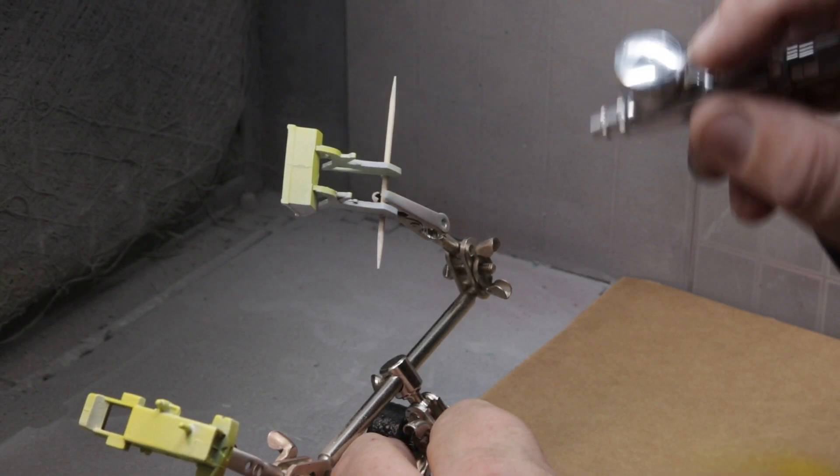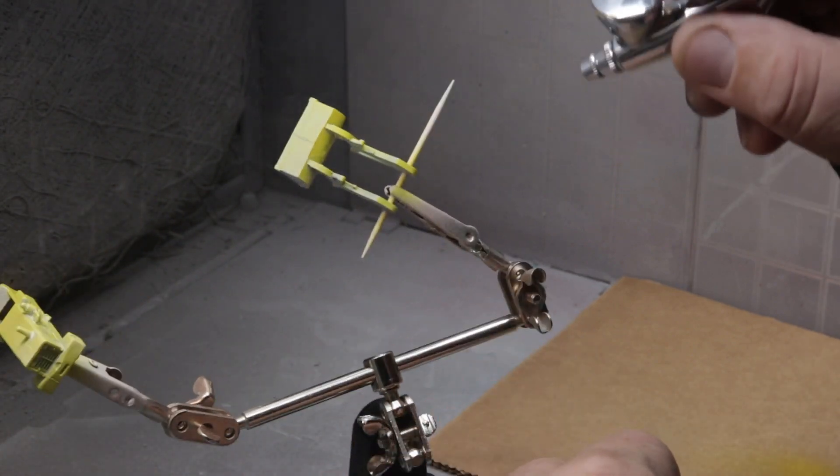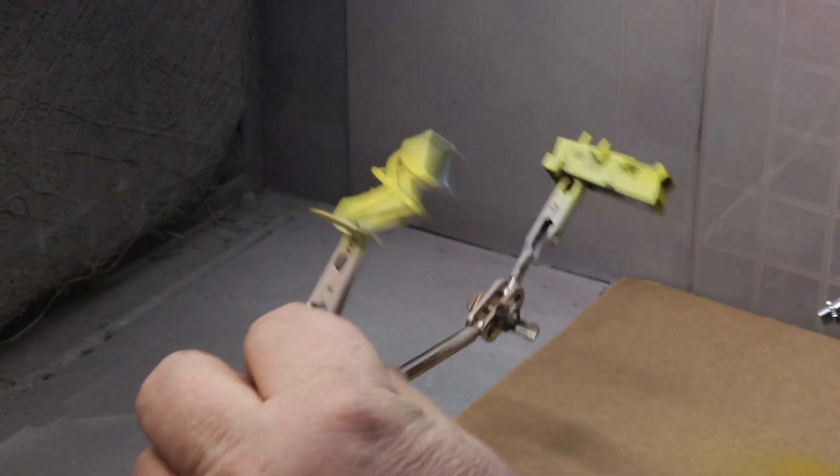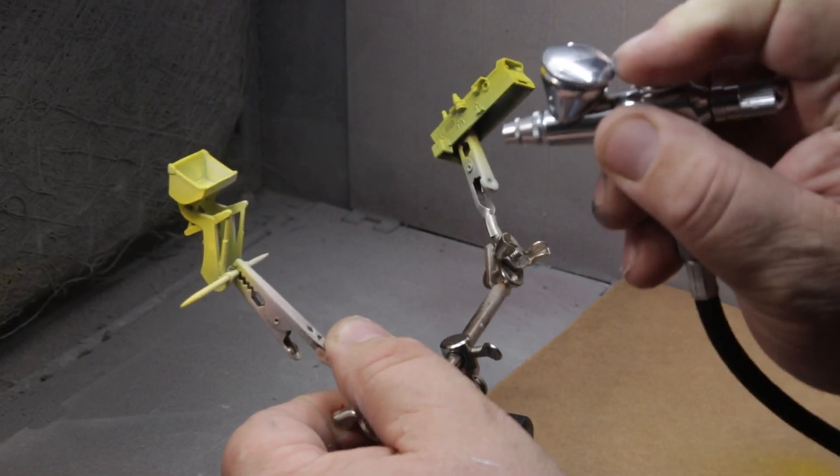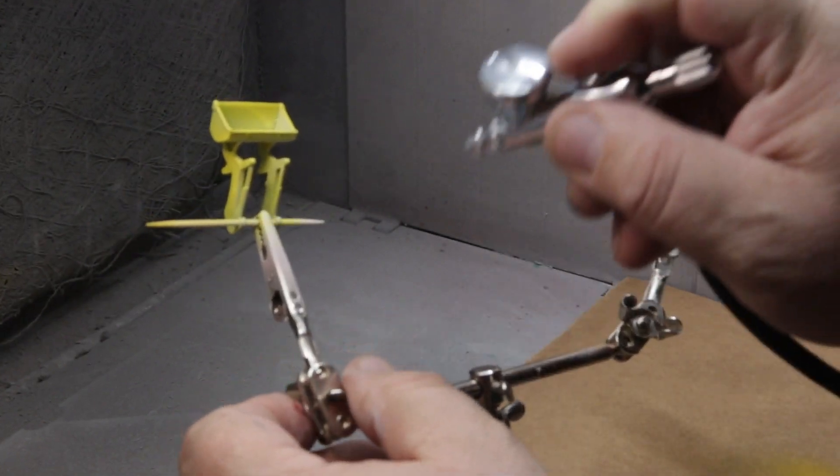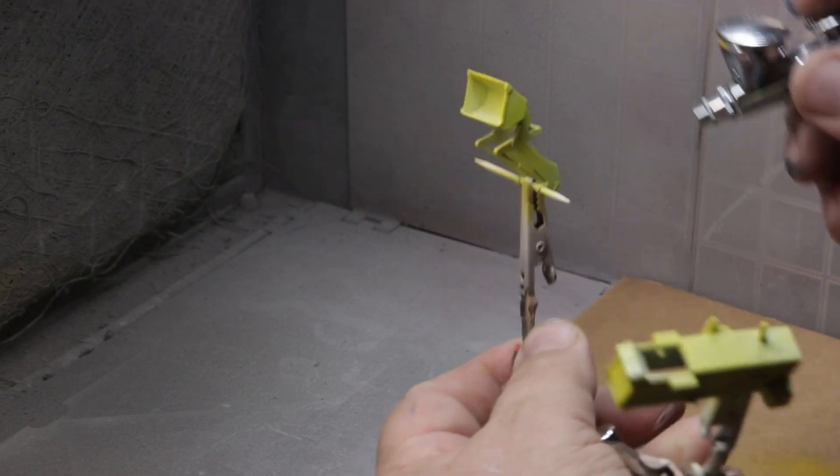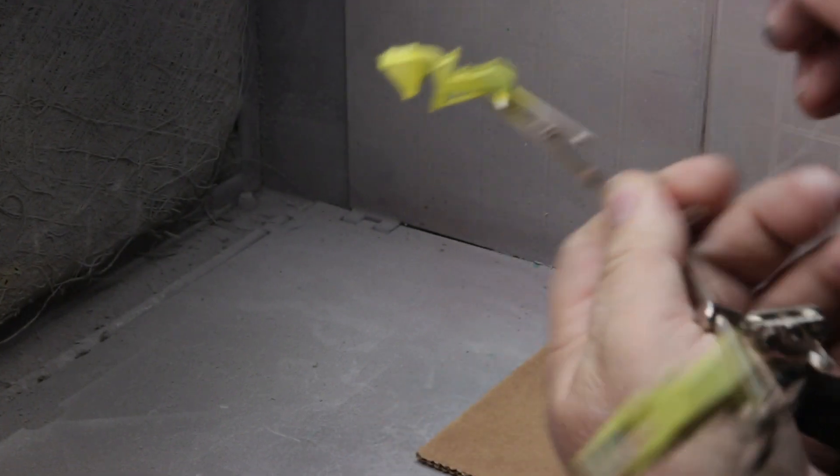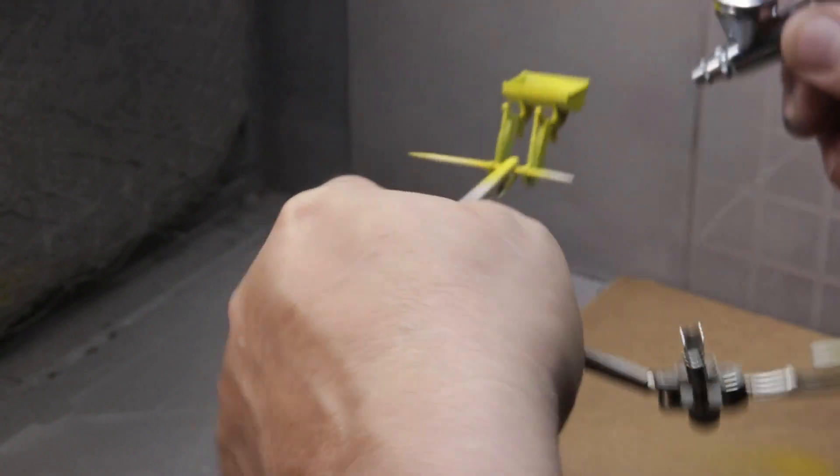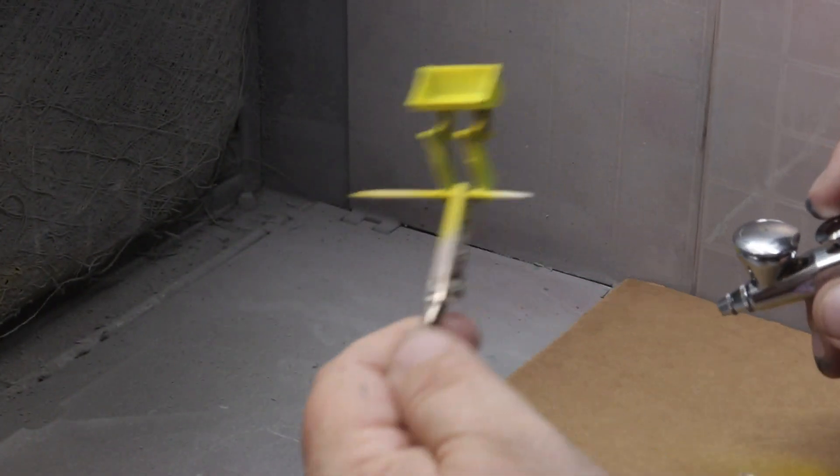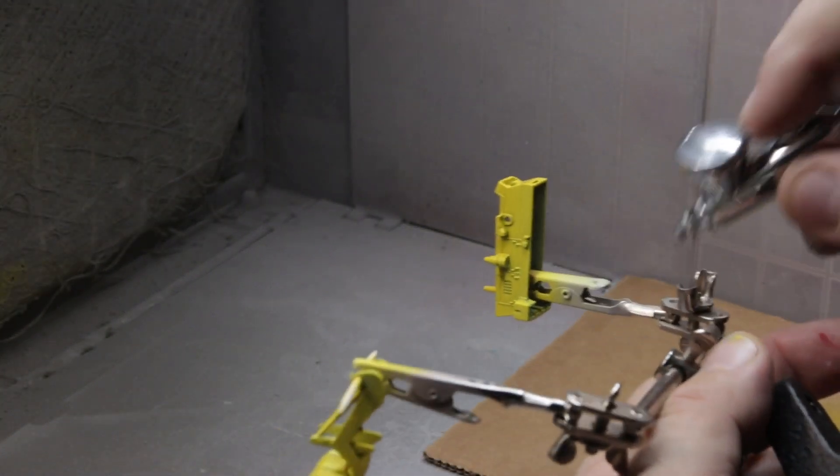And again, getting it from all different angles inside those arms, inside the bucket, the bottom of the bucket. Of course, I always let the tack coat dry for about 15 to 20 minutes. And then I come in with successively heavier coats of the Matchbox Construction Yellow, as I like to call it.